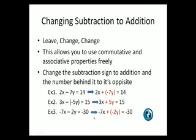In our last example, we have negative 7x for the first term, but that term still stays the same. It's only the subtraction that we change to addition, and the number behind the subtraction becomes its opposite.